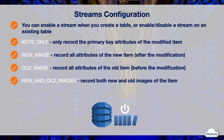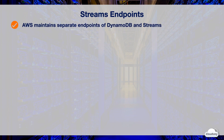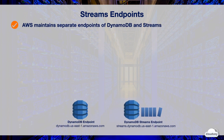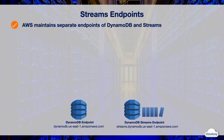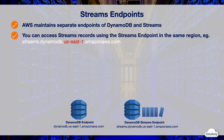With the New and Old Images option, your stream can record images both before and after the modification. AWS maintains separate endpoints for DynamoDB and Streams. To work with database tables and indexes, your application must access DynamoDB endpoints. To read and process stream records, your application must access a Streams endpoint in the same region, as both DynamoDB and Streams endpoints are region-based.